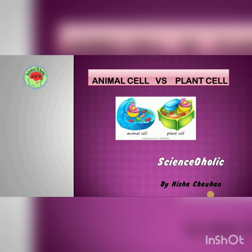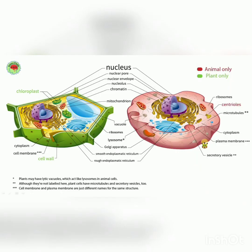If you have not seen that video, the link is given in the description box below. So let's start the video. These are the cells — this green one is the plant cell and this red one is the animal cell. The similarities between both cells are shown, and the green and red colors indicate the differences. In plant cell, chloroplast, cell wall, and plastid are the differences, and in animal cell, centriole is present while it is absent in plant cell.